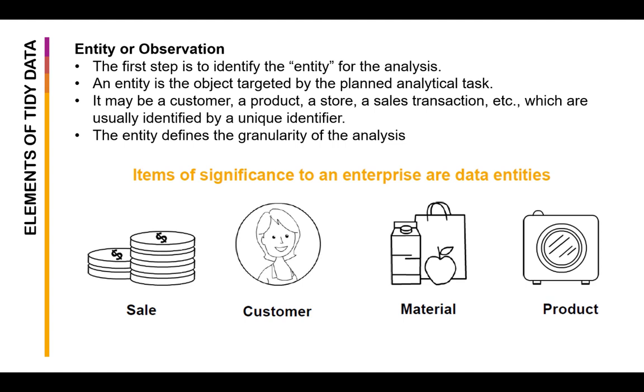Before we prepare data, first we need to understand the granularity of our data. What is the entity that we need to analyze? An entity is the object targeted by the planned analytical task. It may be a customer, a product, a store, a sales transaction, which are usually identified by a unique identifier. You can have an analytical dataset which consists of one distinct customer per row, or one distinct product per row, or it could be one distinct sale. Basically this entity defines the granularity of the analysis.